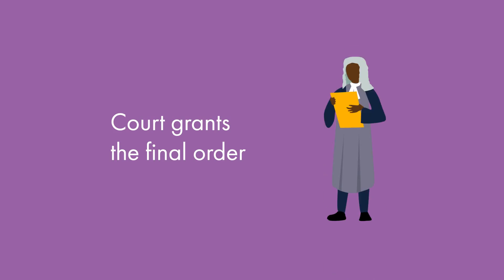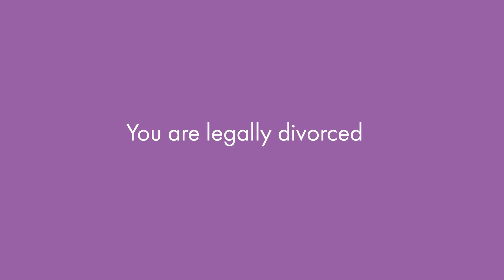Stage 7: Court grants the final order. Once you have submitted your final order application, the court will check that time limits have been met and there are no other reasons why they cannot grant the divorce. If they are satisfied, the court will grant the final order and provide both parties with a copy. At this stage you are legally divorced, no longer married, and are free to marry again if you wish.